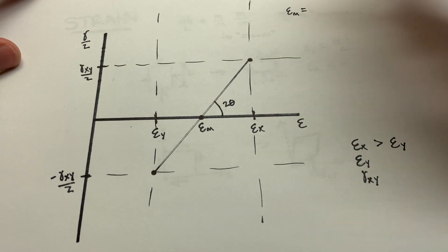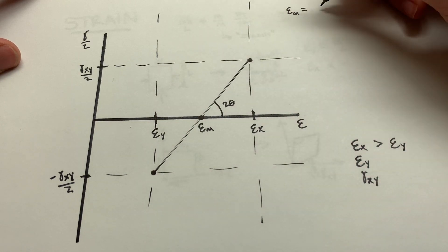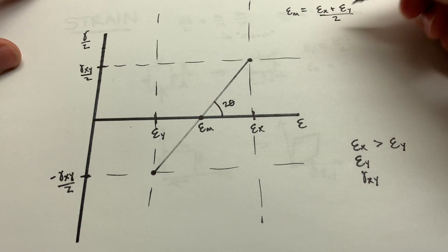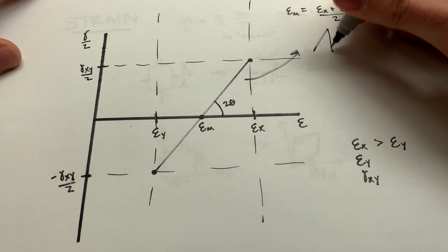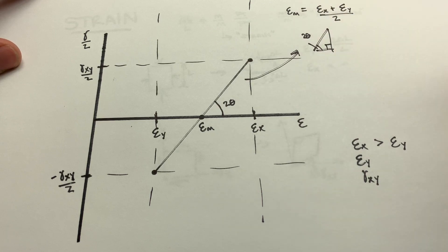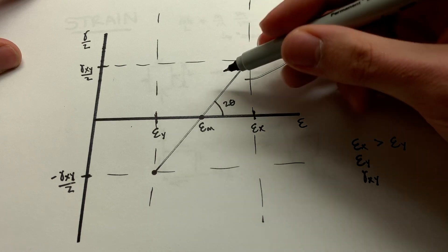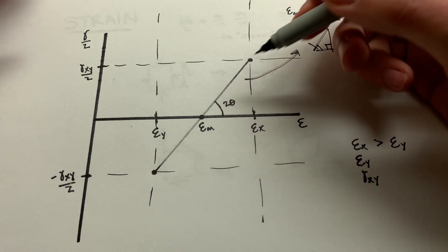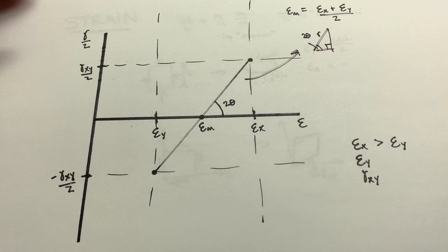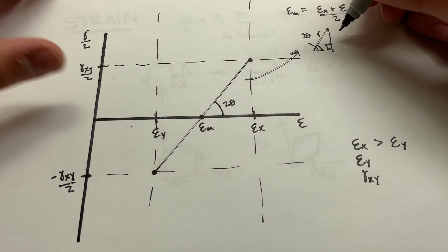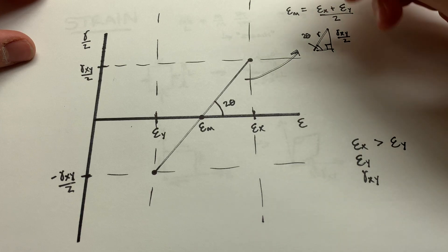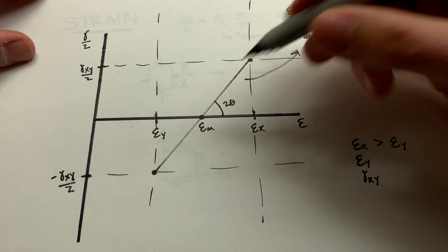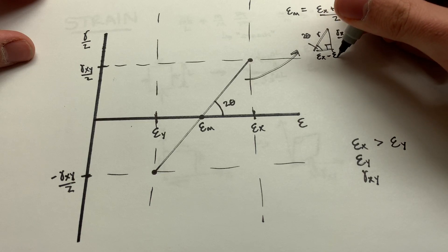We'll define epsilon m to be equal to, remember, it's the average. It's the midpoint of these two, so it's just going to be the average of epsilon x plus epsilon y, those two over 2. And now we can come in and say, we've got a right triangle here, 90 degrees, 2 theta degrees, and some angle there. And what we're really interested in here for finding the principal strains, once again, is this value r. And so we can take a look at this. This vertical length is going to be gamma xy over 2, just reading it across there. This horizontal value is going to be the difference between epsilon x and epsilon m. So that's epsilon x minus m.